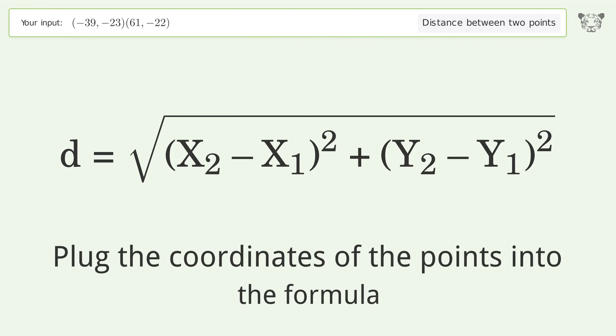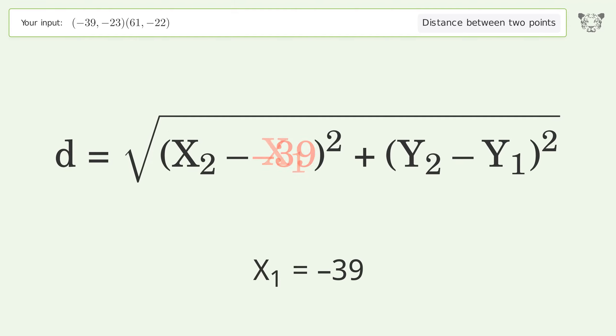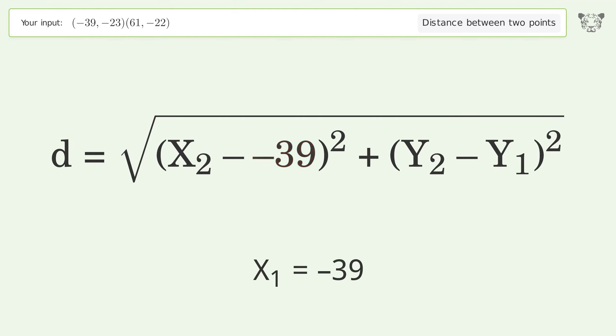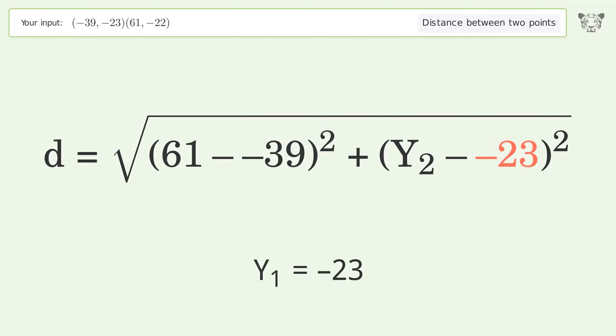Plug the coordinates of the points into the formula. x1 equals negative 39, x2 equals 61, y1 equals negative 23, and y2 equals negative 22.